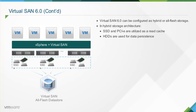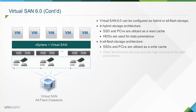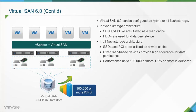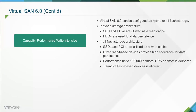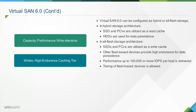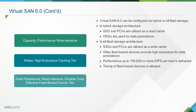Virtual SAN 6.0 can also be deployed as an all-flash storage architecture, in which flash-based devices such as SSDs and PCIe are intelligently utilized only as a write cache. The other flash-based devices provide high endurance for data persistence. This implementation delivers extremely high performance, up to 100,000 or more IOPS per host without compromising on cost. The all-flash architecture allows tiering of flash-based devices for capacity as a performance write-intensive, high-endurance caching tier for writes and a read-intensive, durable, cost-effective flash-based device tier for data persistence.